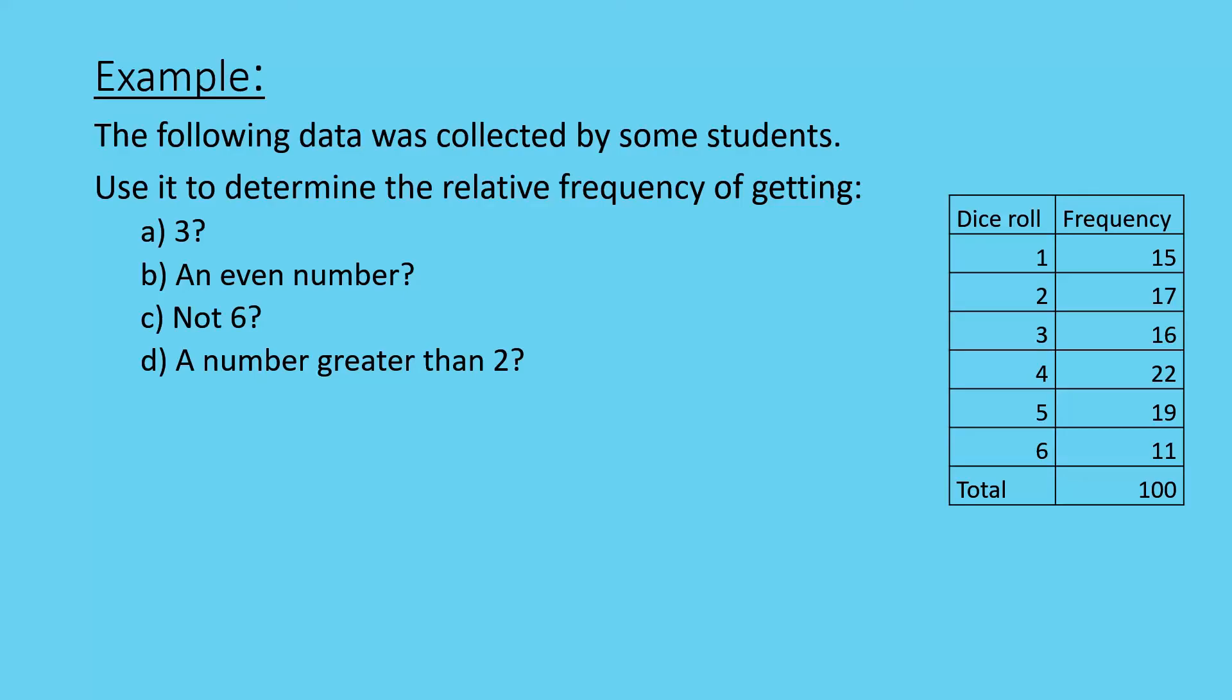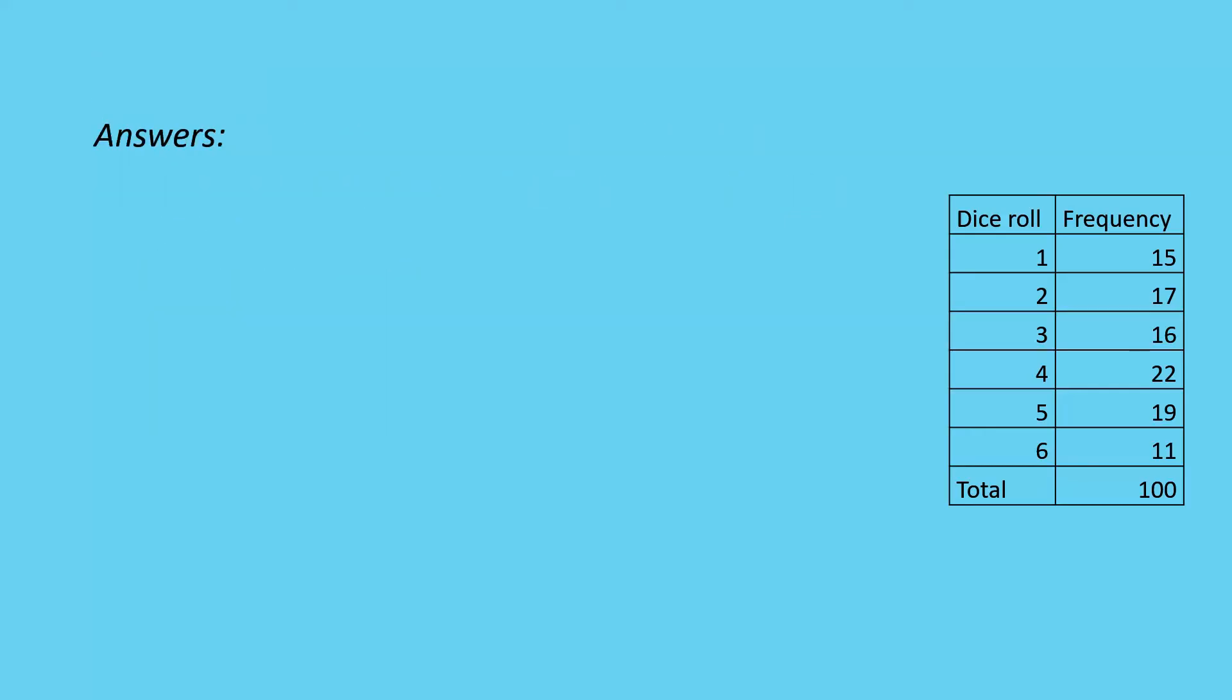So you'll see that we have various frequencies for the various dice rolls. So starting off with the relative frequency results for getting a 3, we see that the 3 was achieved 16 times. So 16 over 100 or 4 over 25. If you're going to simplify that fraction, that gives you 0.16 or 16% exactly in that result.